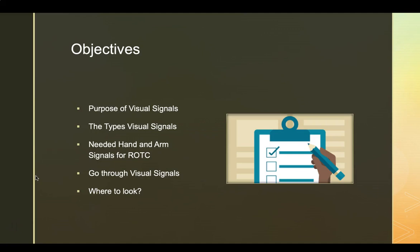The objectives. First, I will go through the purpose of visual signals. Next, I'll go through the types of visual signals. Third, I'll go over the needed hand and arm signals for ROTC. Fourth, I'll go through visual signals and show you actual depictions of them so you can see and learn. Lastly, I'll go over where I found these visual signals and how you can study and look up more signals if you please.